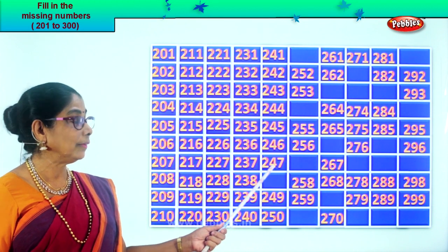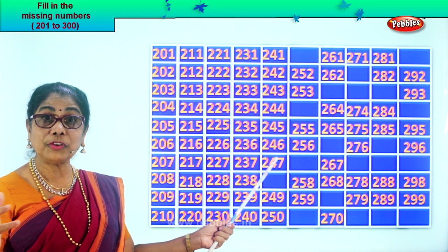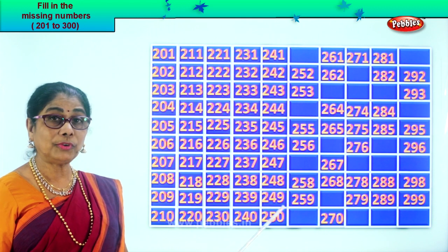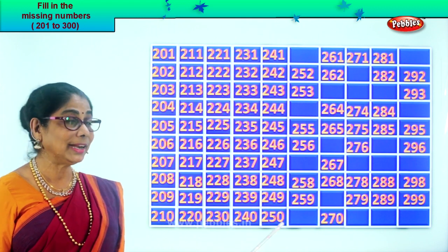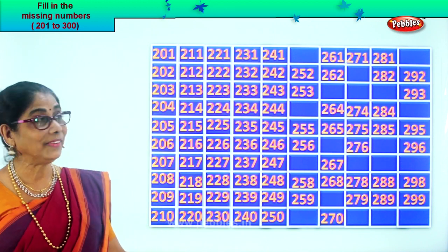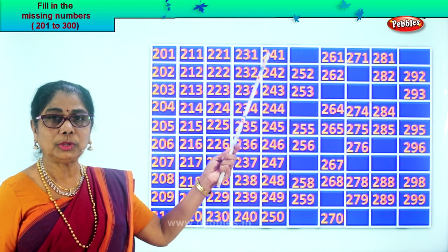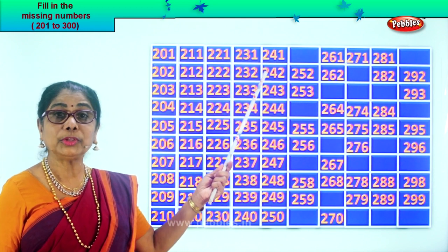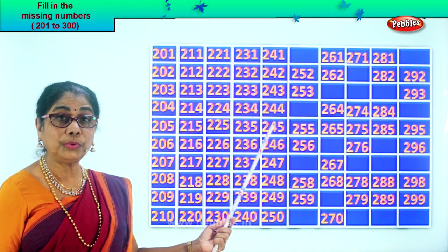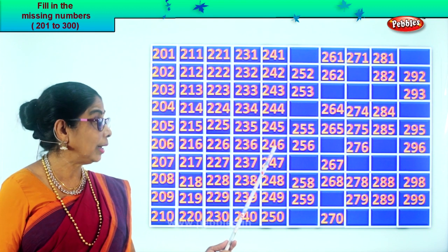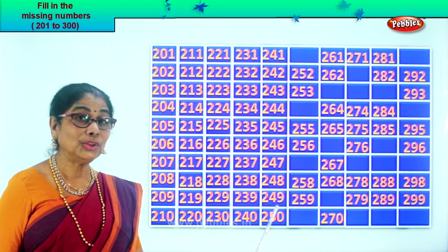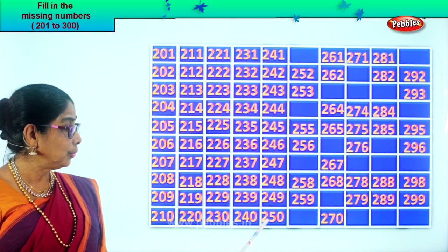Two hundred and forty-seven. After seven — eight. After forty-seven — forty-eight. Two hundred and forty-eight. Two hundred and forty-nine. Two hundred and fifty. Good. Let us read the filled-in numbers: two hundred and forty-one, two hundred and forty-two, two hundred and forty-three, two hundred and forty-four, two hundred and forty-five, two hundred and forty-six, two hundred and forty-seven, two hundred and forty-eight, two hundred and forty-nine, two hundred and fifty.